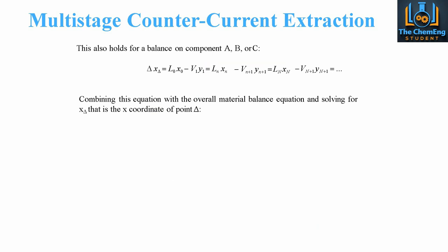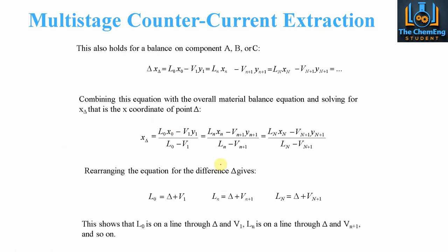This holds for the balance on all individual components as well — we perform an overall balance and also balances on A, B, and C. For any given component, the difference is constant throughout all streams. Rearranging, we get: L0 = delta + V1, and Ln = delta + Vn+1. This means L0 lies on the line through delta and V1, and they share these values. The same delta applies throughout, showing consistency as everything comes back to a common point.